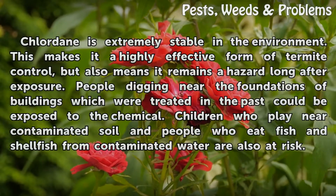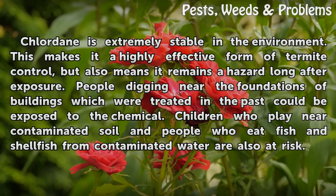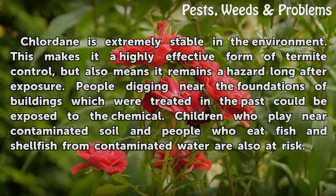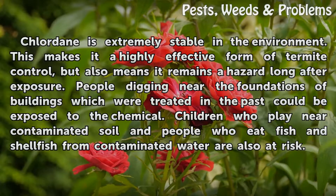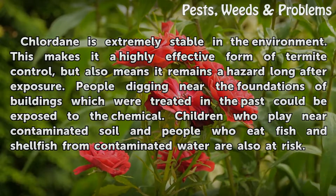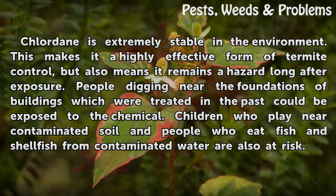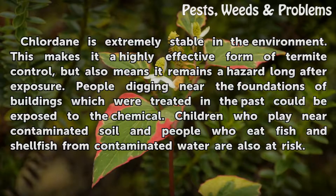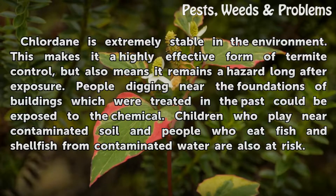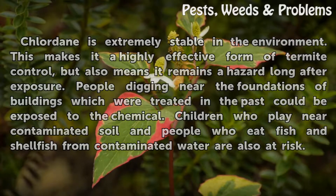Chlordane is extremely stable in the environment. This makes it a highly effective form of termite control, but also means it remains a hazard long after exposure. People digging near the foundations of buildings treated in the past could be exposed. Children who play near contaminated soil and people who eat fish and shellfish from contaminated water are also at risk.